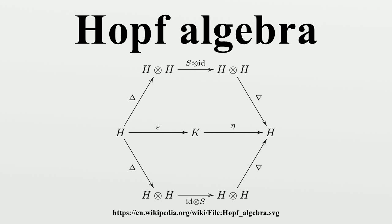In mathematics, a Hopf algebra, named after Heinz Hopf, is a structure that is simultaneously an algebra and a coalgebra, with these structures' compatibility making it a bi-algebra, and that moreover is equipped with an anti-automorphism satisfying a certain property.